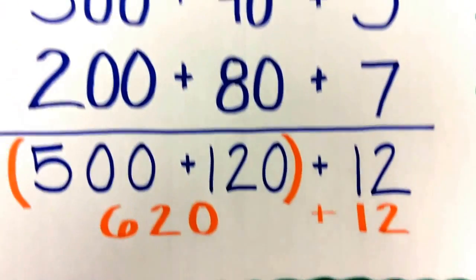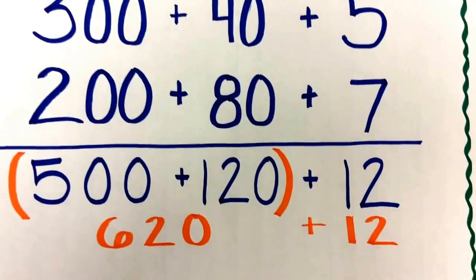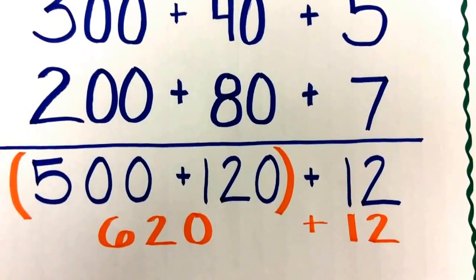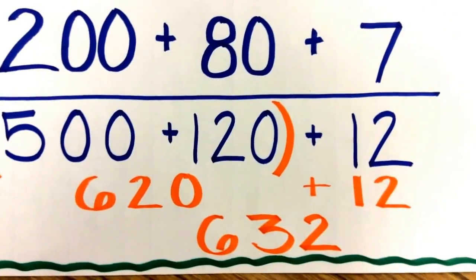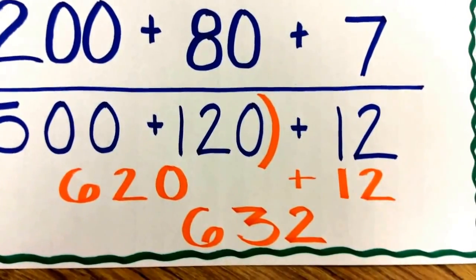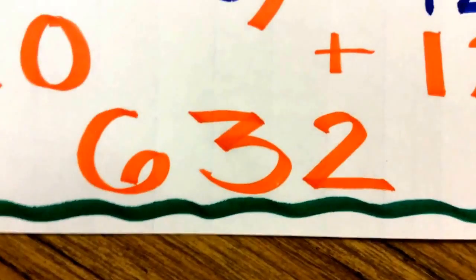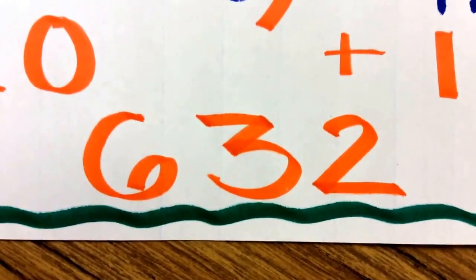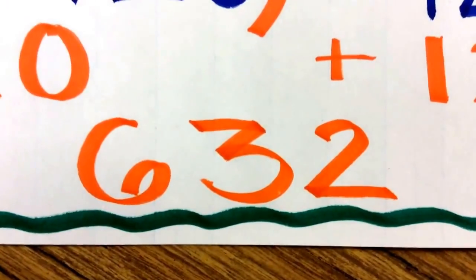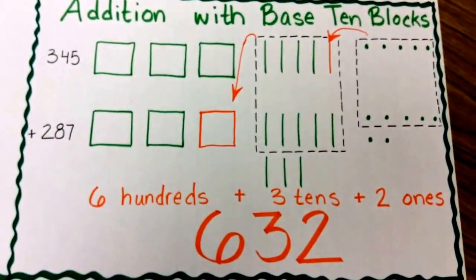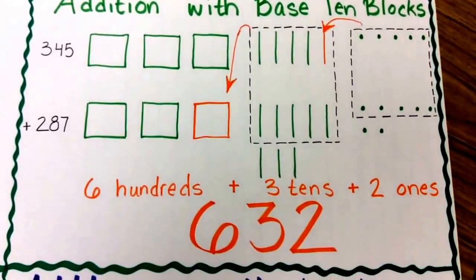Now it's a very simple addition problem. I need to add 620 plus 12. I did some quick mental math, and when I added 620 plus 12, I ended up with that same number: 632. We saw 632 as a sum when we did the standard algorithm and when we did the addition with base ten blocks.